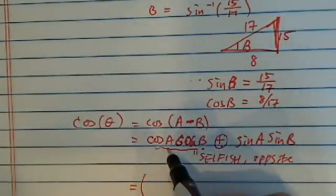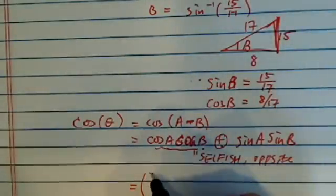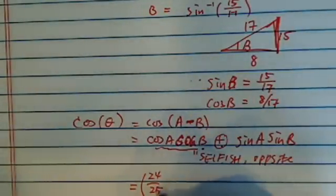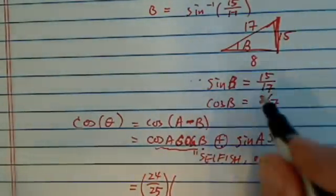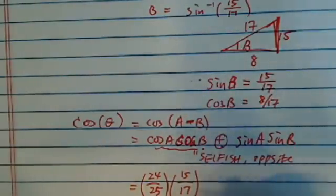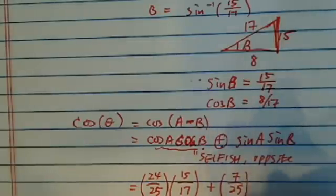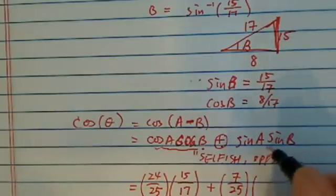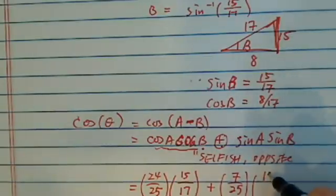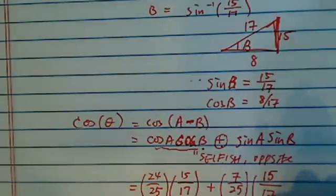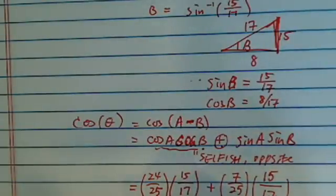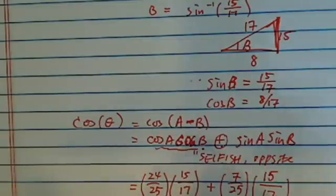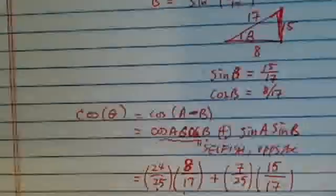So let's plug it into what we have found before. Cosine of A, all the way up here is 24 over 25. Cosine of B is 8 over 17. Plus sine of A, we have 7 over 25, and sine of B, we have 15 over 17. I must have done something wrong over here. Let's see, cosine of A, cosine of B. Okay, this is 8.